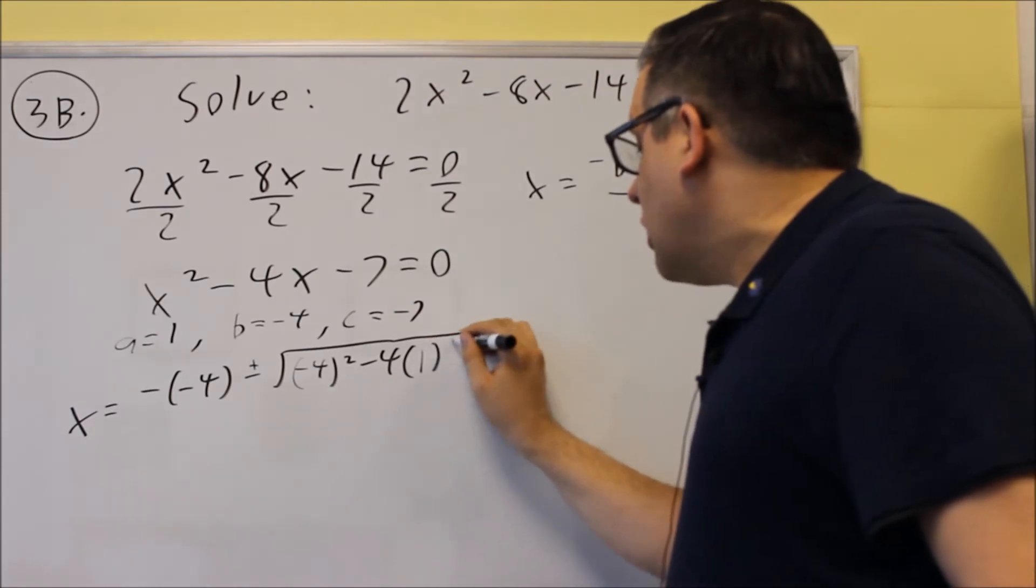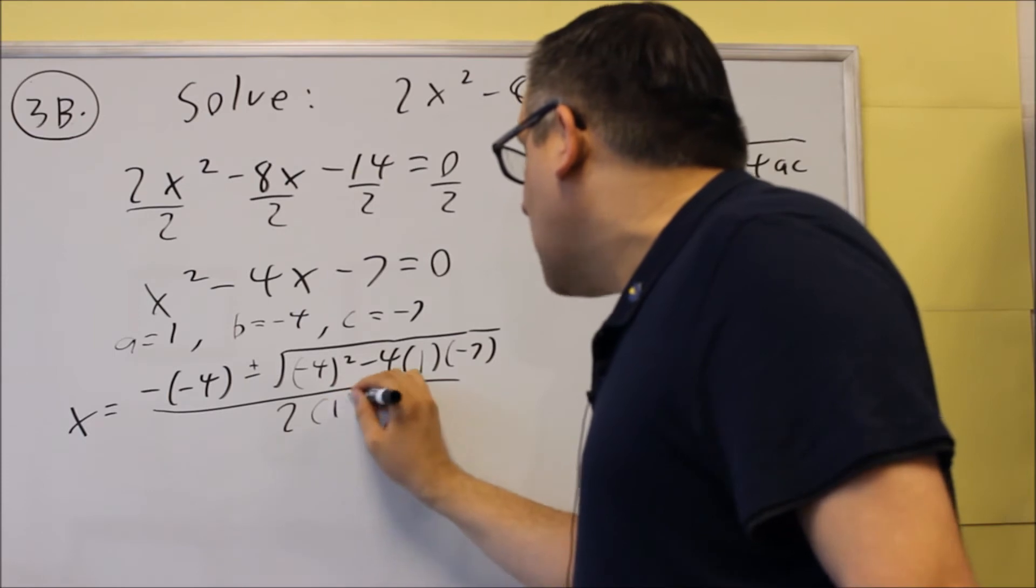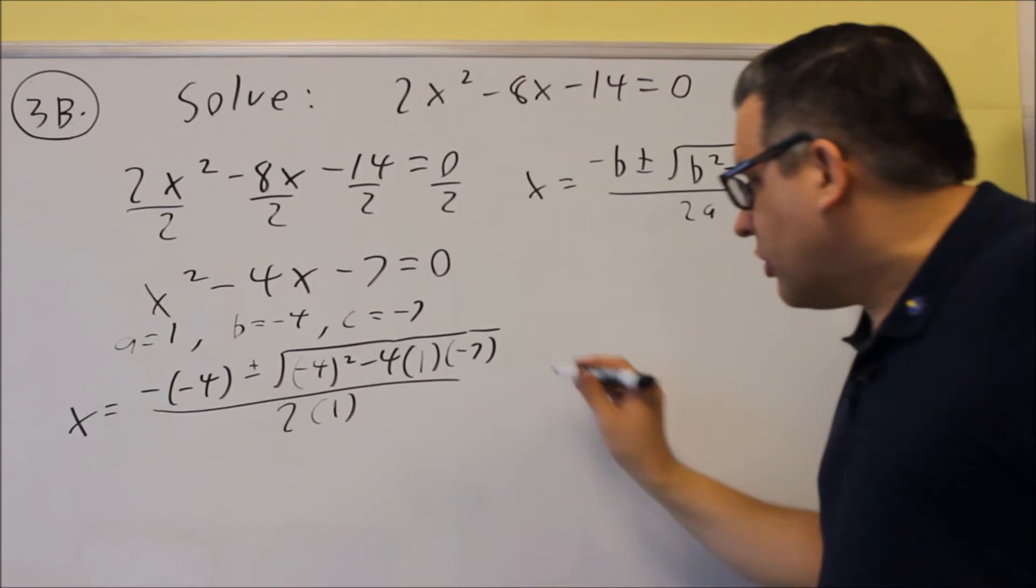a is 1, and c is negative 7. That's all divided by 2 times a, or 2 times 1. So that's the first setup that we'll do with that.